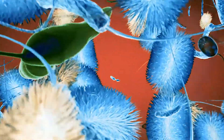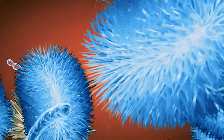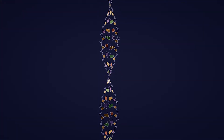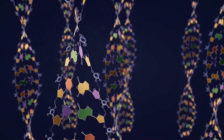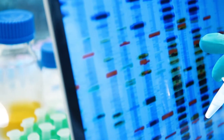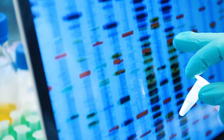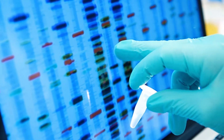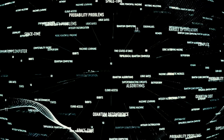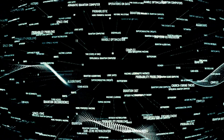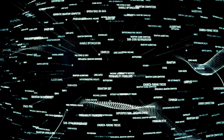Within every cell of every organism on the planet is a blueprint, and that blueprint, which is in DNA, in humans and in things like bacteria, encodes the plan for the cell and for everything that the cell does. If you can read off the blueprint of the cells of an organism that's infecting a patient, you can use that to infer all sorts of things about that organism.